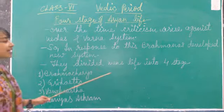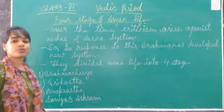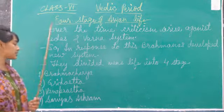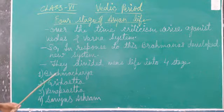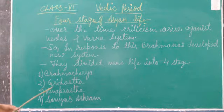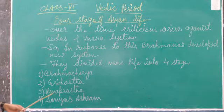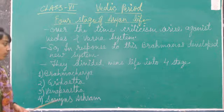They divide men's life into 4 stages. First is Brahmacharya, second is the Grihasthashram, then Vanaprastha, and the Sanyasashram.